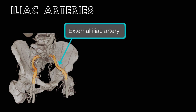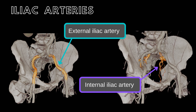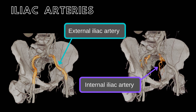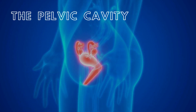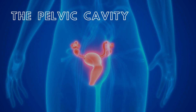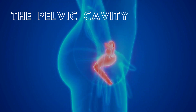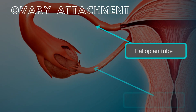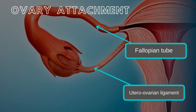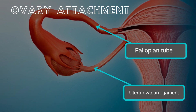Bordering the ovaries are the iliac arteries. The external iliac artery is superior to the ovary, and the internal iliac arteries are inferior to the ovaries. Connective tissue structures known as ligaments contribute to maintaining the structural integrity of the ovaries. The mesovarium links the ovary to the posterior aspect of the broad ligament. Between the mesovarium and the pelvic wall's lateral aspect lies the suspensory ligament. Additionally, the ovary is tethered to the lateral uterine wall by the round ligament.